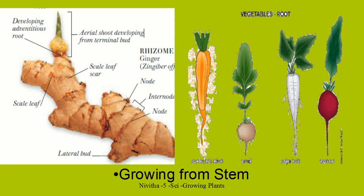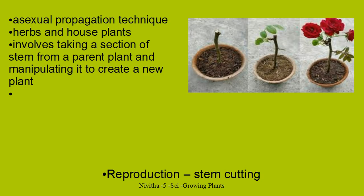Likewise, carrot can be grown from the pores. If you cut the carrot and put it in a suitable situation, the leaves will keep on growing. Likewise, turnip, radish — all can be grown from the stem. There is another way of reproduction by plants. It is called stem cutting. We have seen how it grows from the roots, from the stem, and from the seed. Now we will see how it can grow from stem cutting.